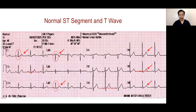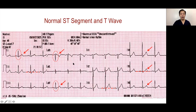T-waves could be variable — they could be negative in lead V1, which we sometimes call juvenile T-waves, and they could be negative in lead 3 as well. These are normal variants in patients.